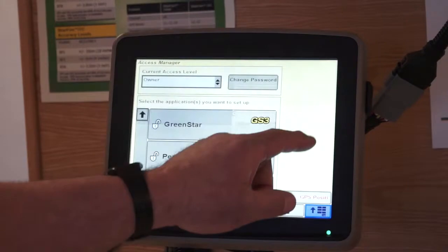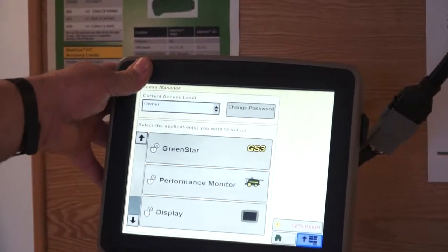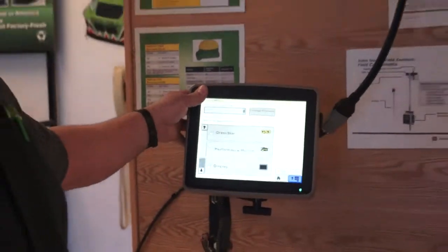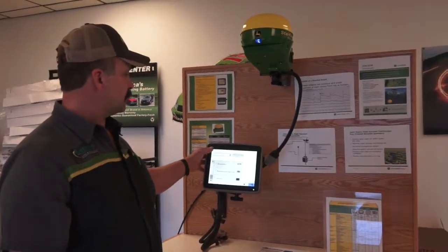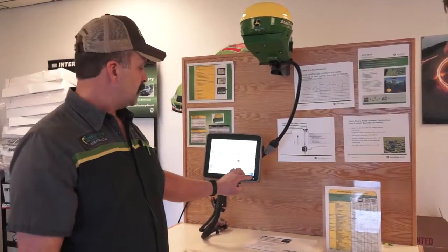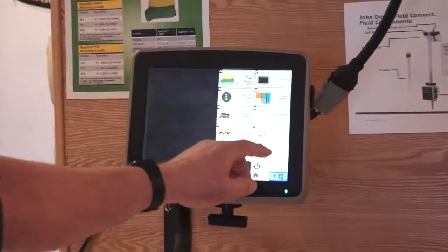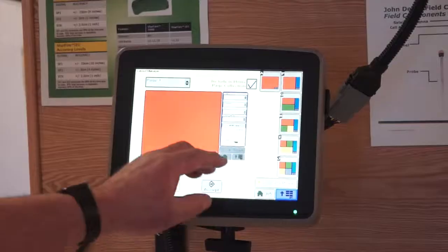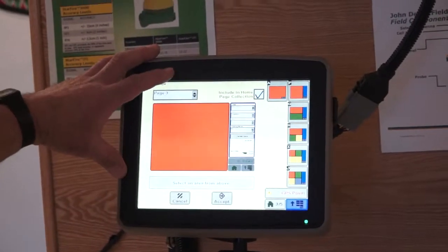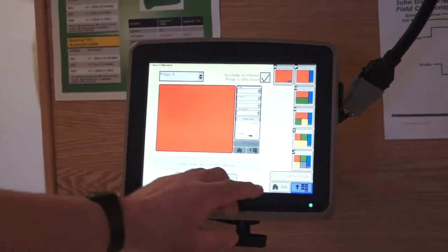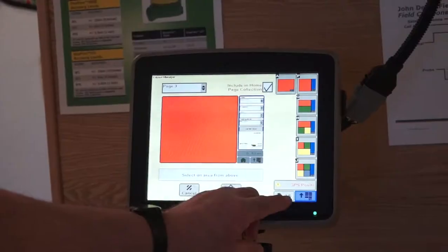Next one up, access manager. If you as an operator want to lock out operations from other operators from making changes, you can lock this display. Back to menu again, we have layout manager. Through layout manager is where you would set up your initial run pages. You can see right here we're on run page three of five.